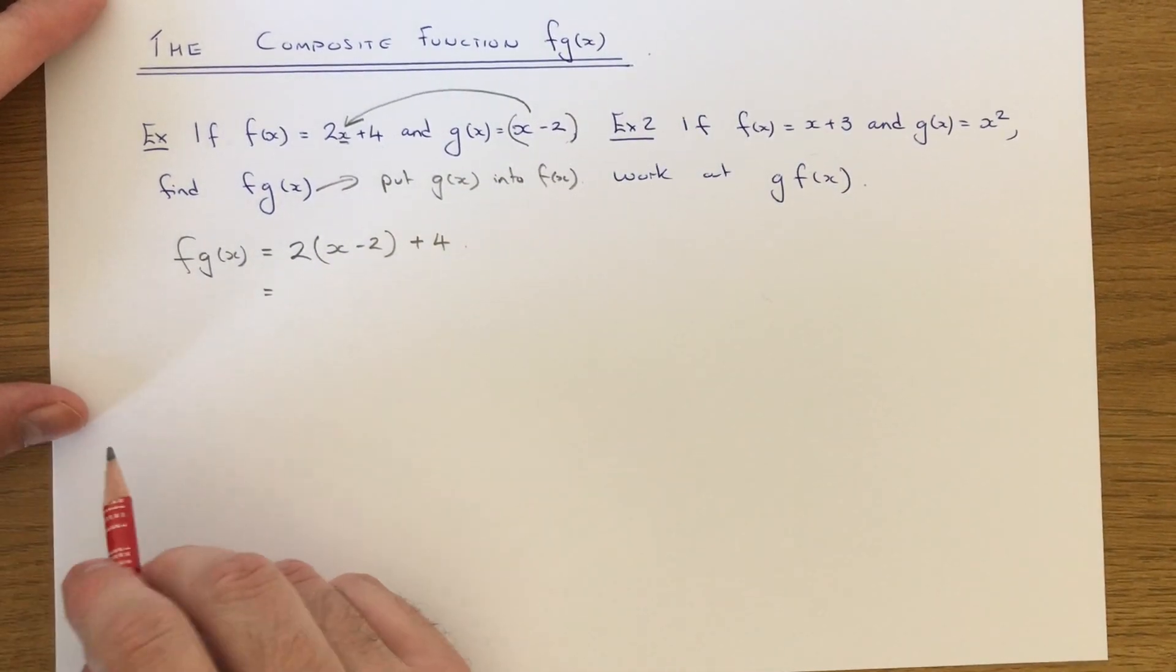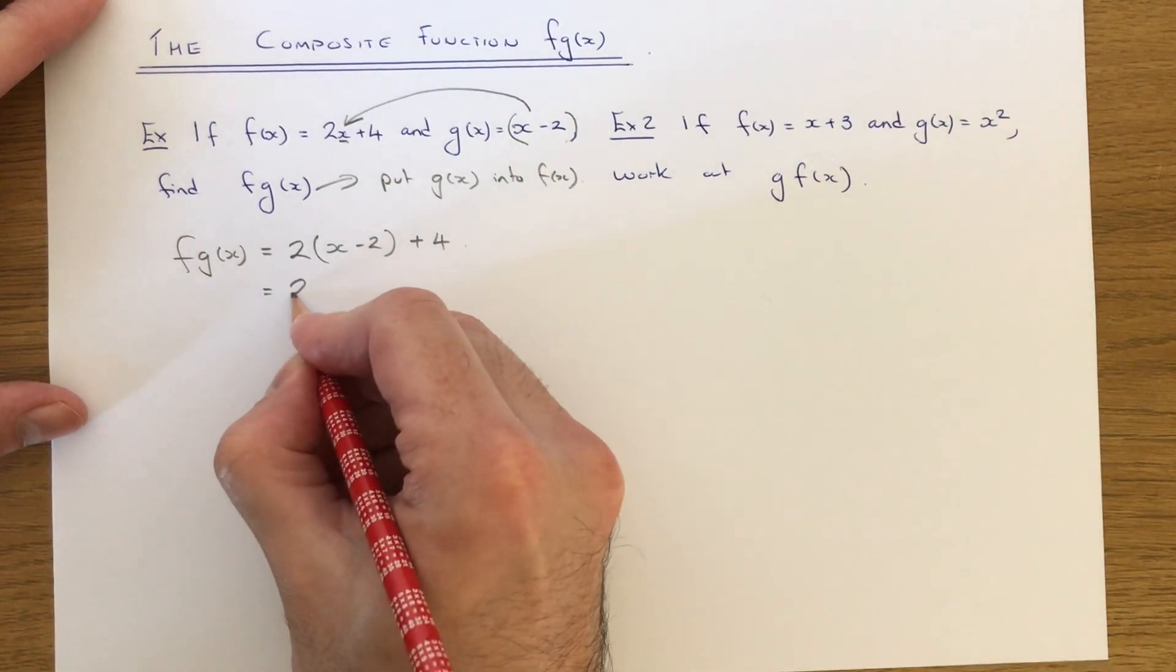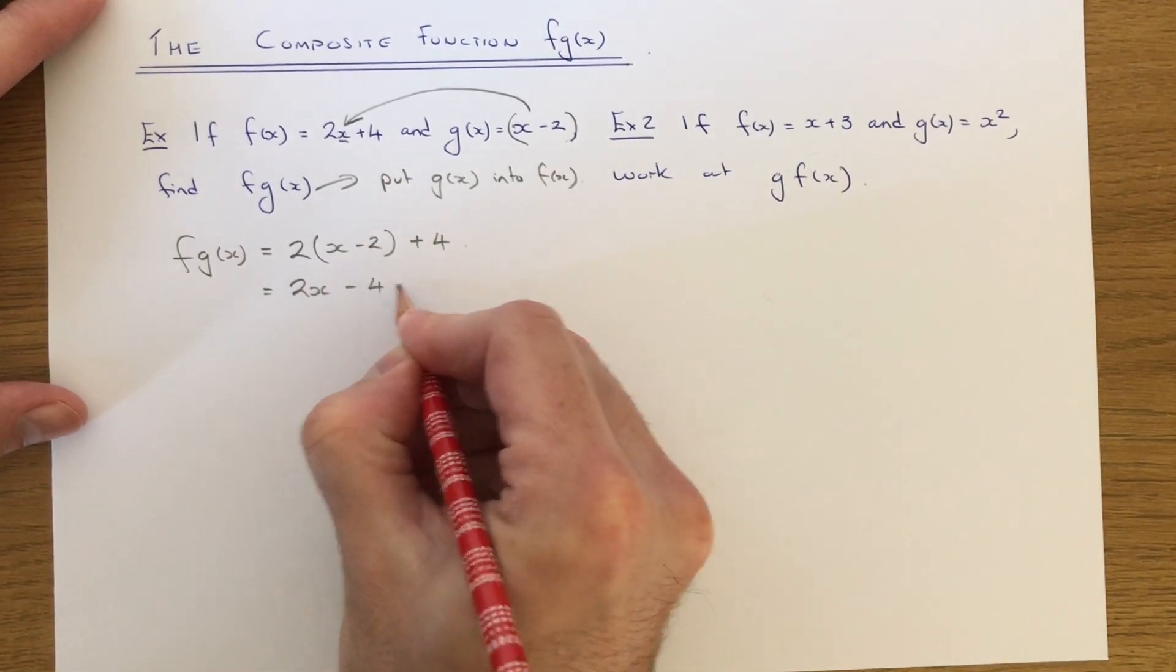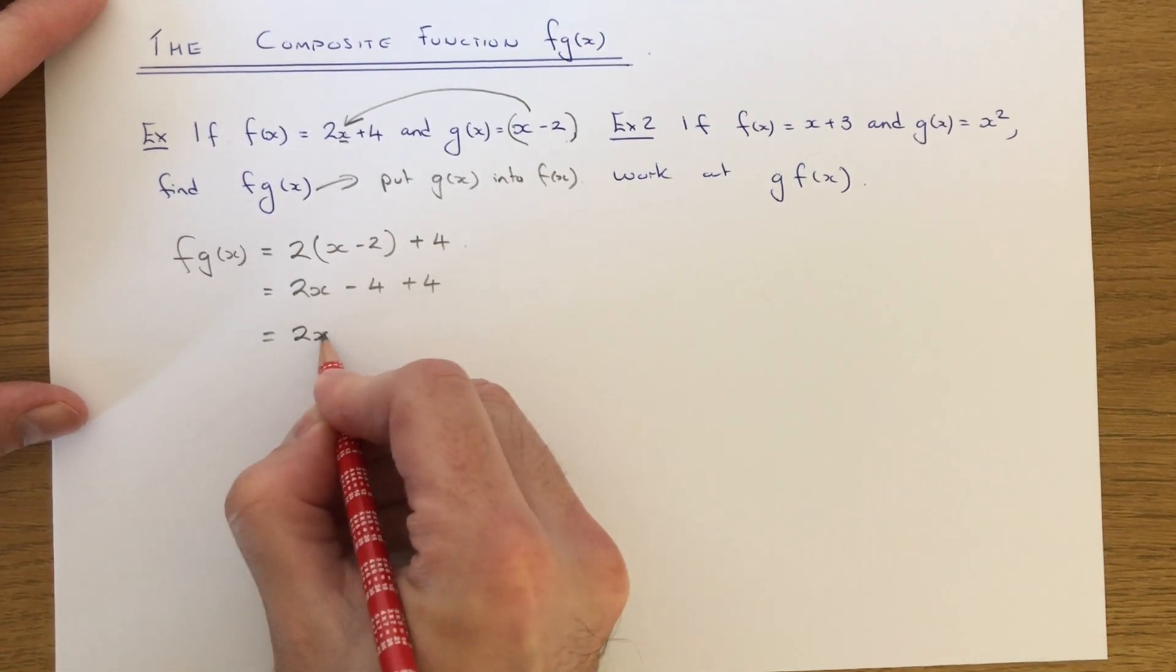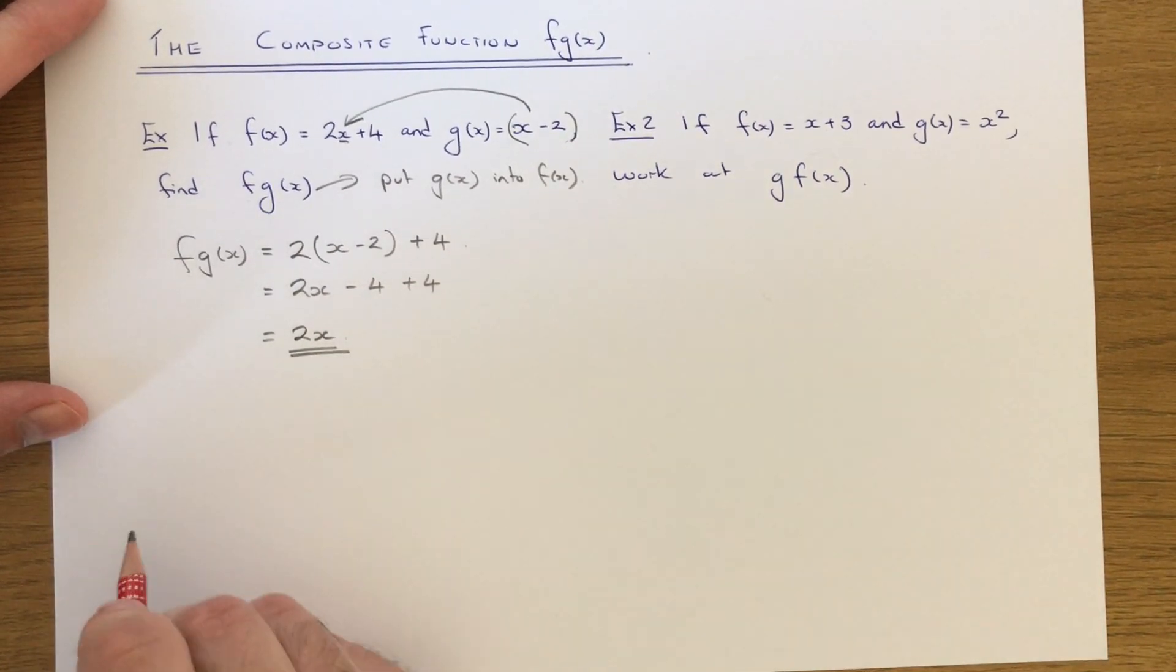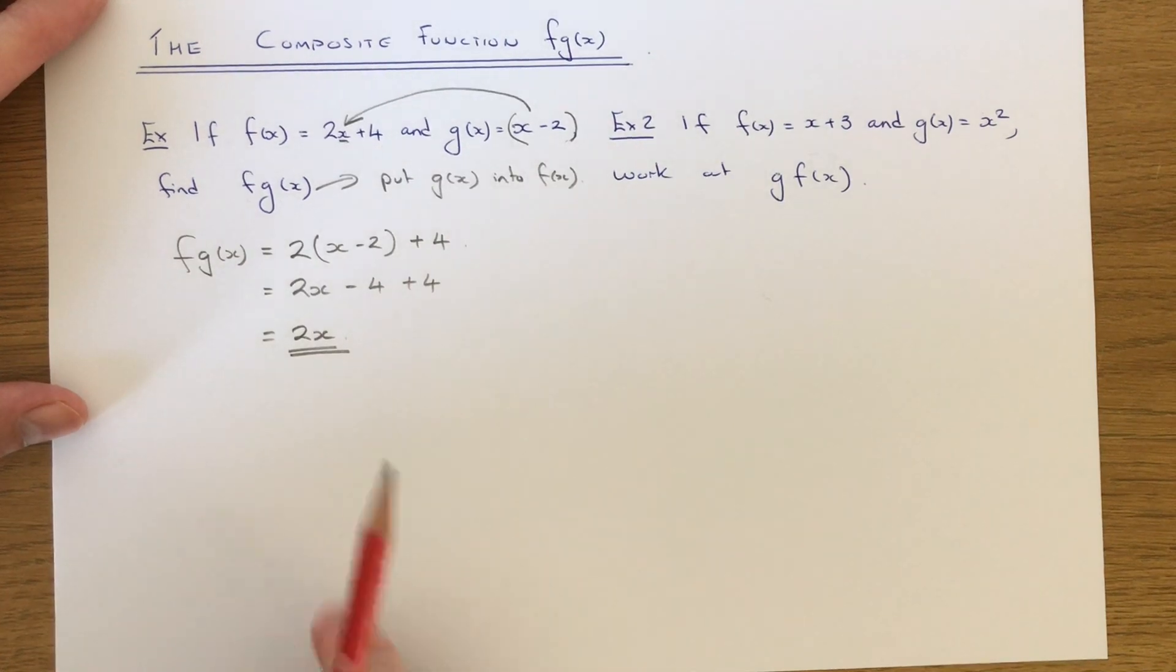So we can then simplify this a little bit by expanding out the brackets. And this will give us a final answer of 2x. So this is the composite function f g of x.